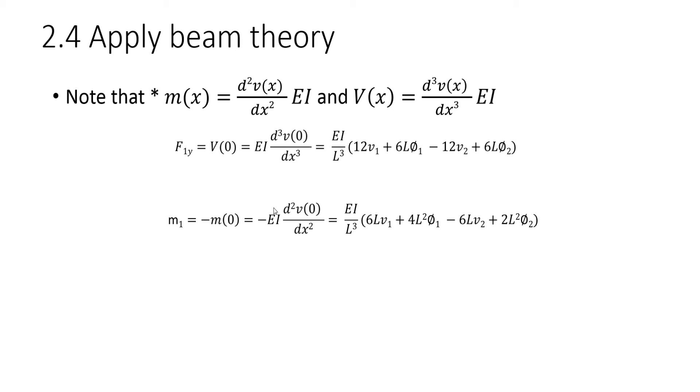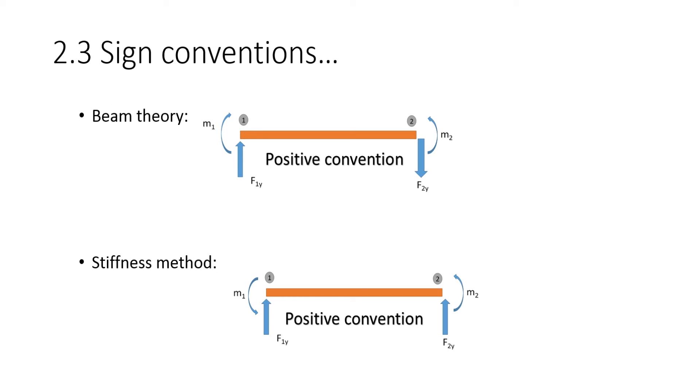Next, we say the moment at 1 is equal to minus the moment at 0. This is due to the sign convention. You can look at my previous slide. M1 is equal to minus M0. You see the directions of these two moments are different. So M1 is equal to minus the moment at node 0, because beam theory is used in the displacement function's convention. So to get this convention you must put a negative in front of it. So then you get that expression.